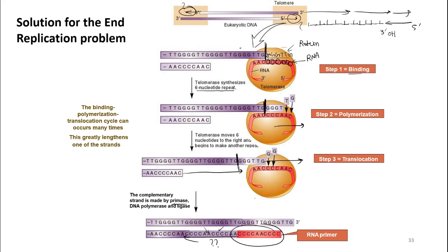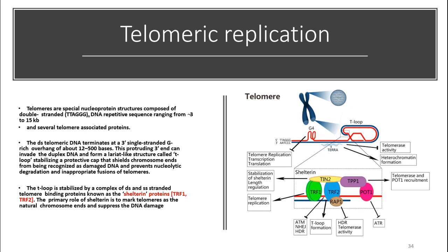Without telomerase, the ends of eukaryotic chromosomes shorten with each round of replication, causing aging. Telomerase is not found in all somatic cells — it is found only in stem cells and in some cancer cells. That is why chromosome shortening is related to aging.